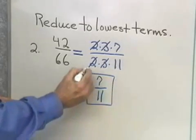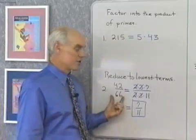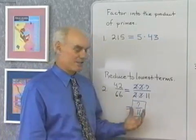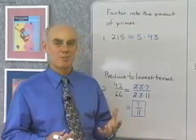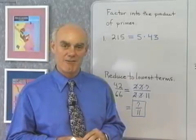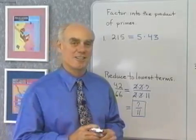So, 7 elevenths is this fraction reduced to lowest terms. So, that's factoring, that's what's called reducing to lowest terms, and I accomplish it by factoring the numerator, factoring the denominator, and then dividing out any factors they have in common. Here's our next example.